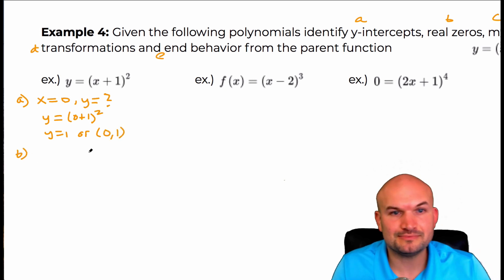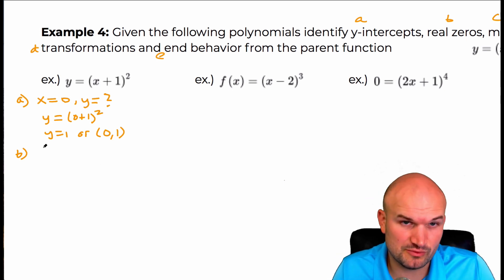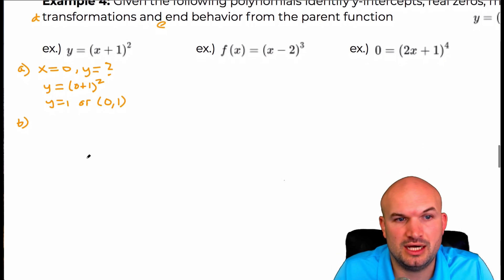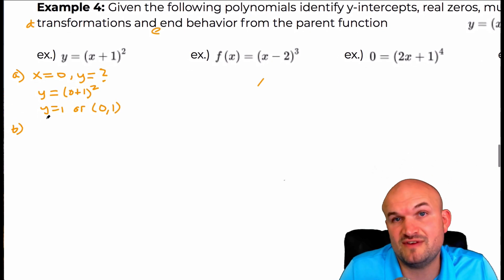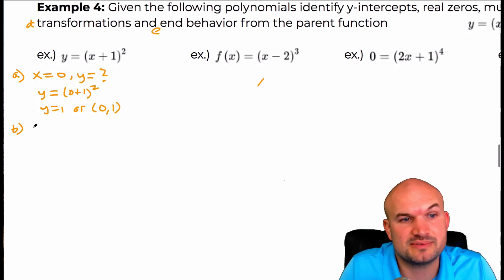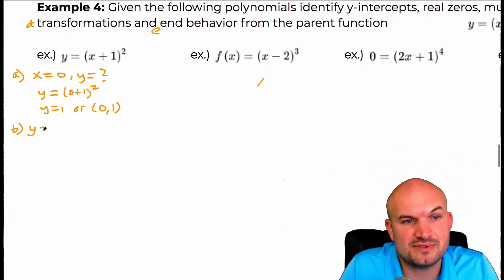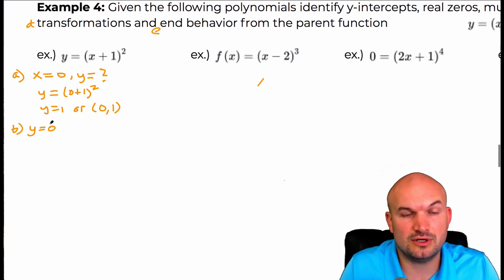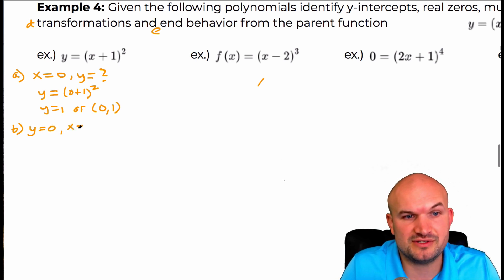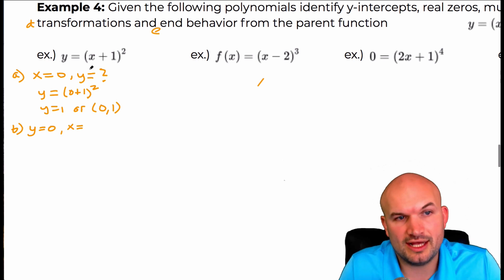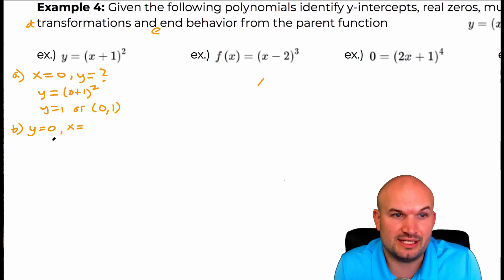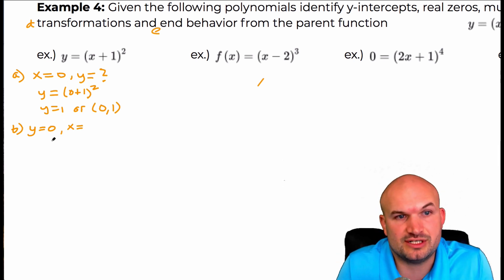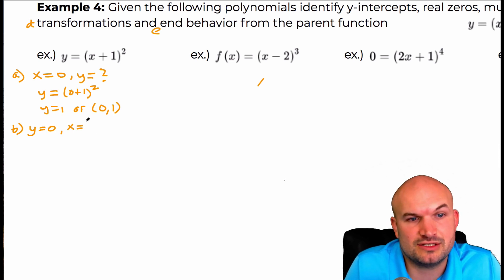For part B, this is where it's really helpful to have the binomial squared: finding the real zeros, which is just finding the x intercepts. For the x intercepts, y is going to be equal to zero, and we're looking for the values of x that makes that true. Another way of representing that is when the function is set equal to zero, what values of x make that true?